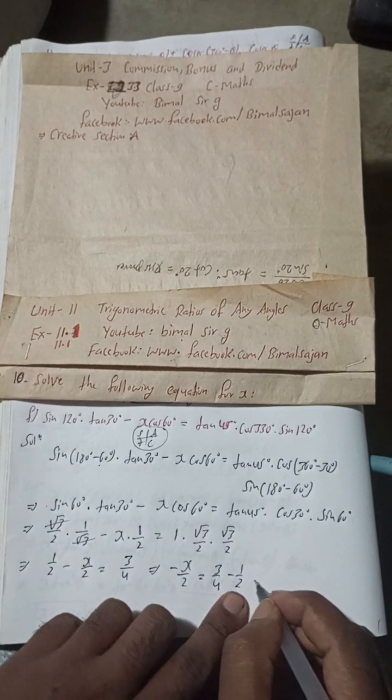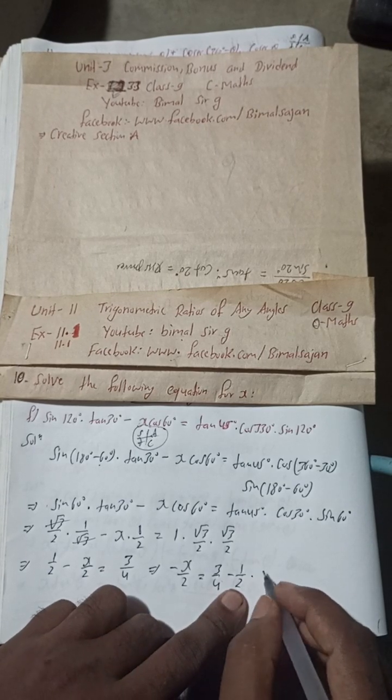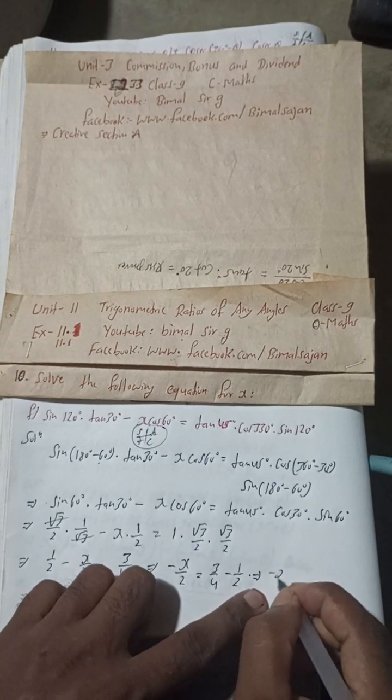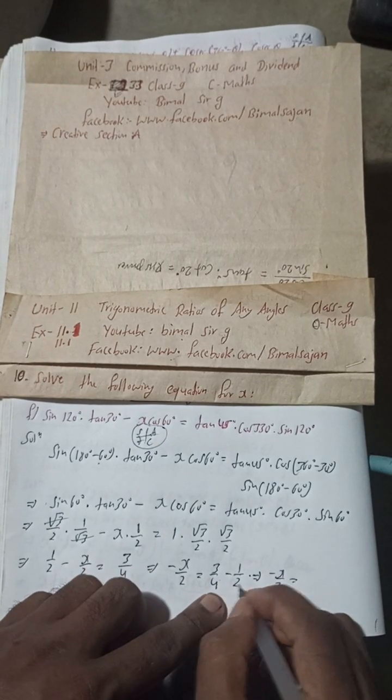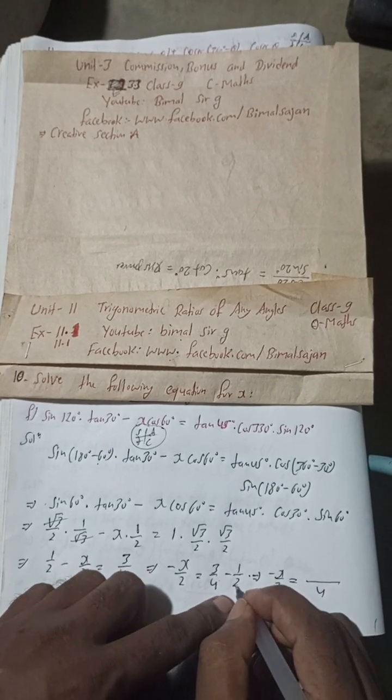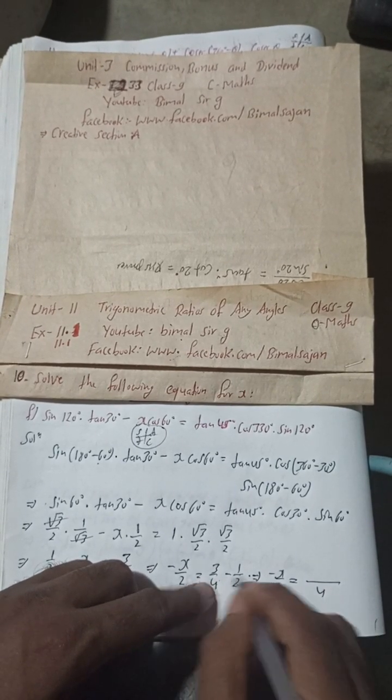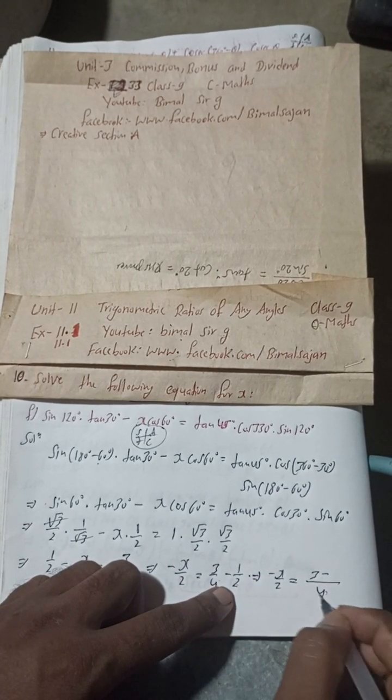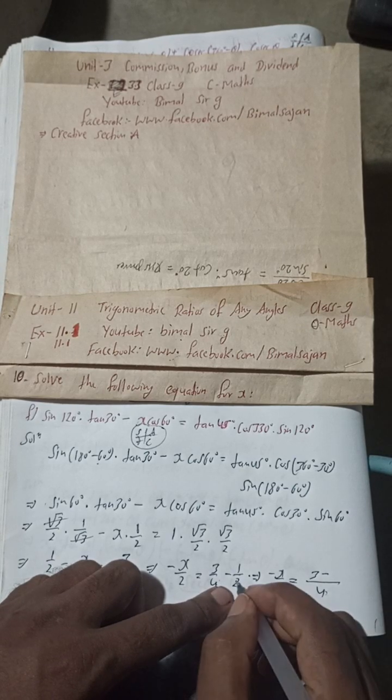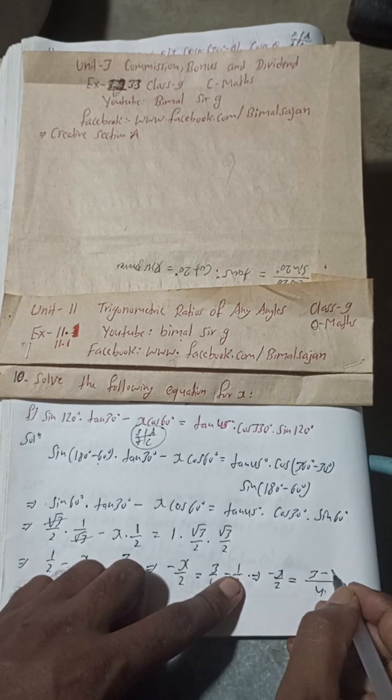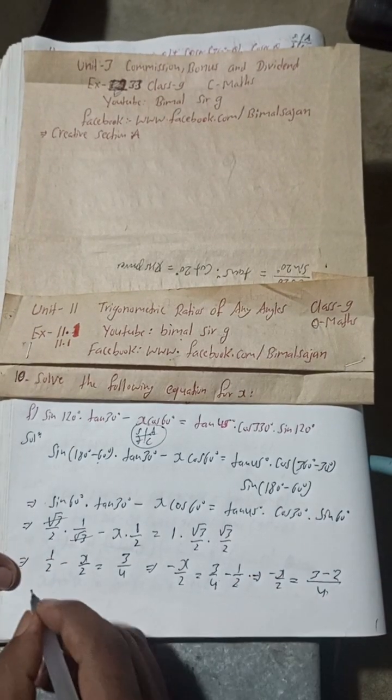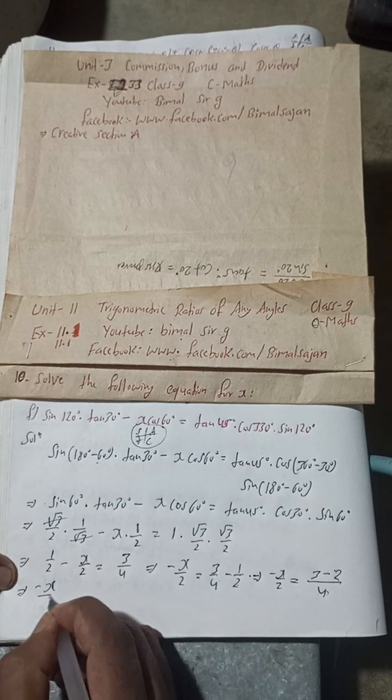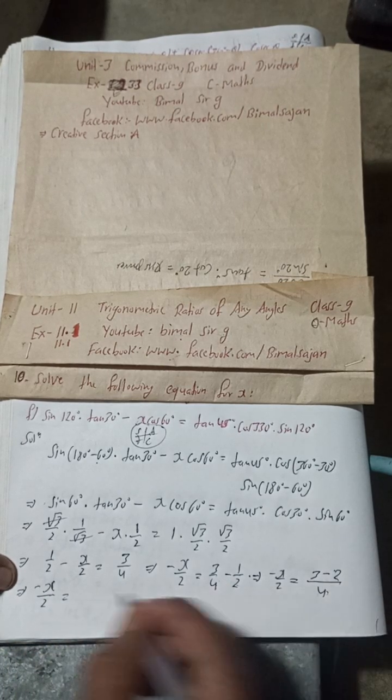This implies minus x by 2 as it is, and here 4 2, so LCM is 4. So there is 3 into 1, 3 minus 1 into 2, 2 by 2. Divide this by 2 to get 4, so multiply this with 2. This is here 2, 1 2 is equal to now minus x by 2 as it is, is equal to this is 1 by 4.